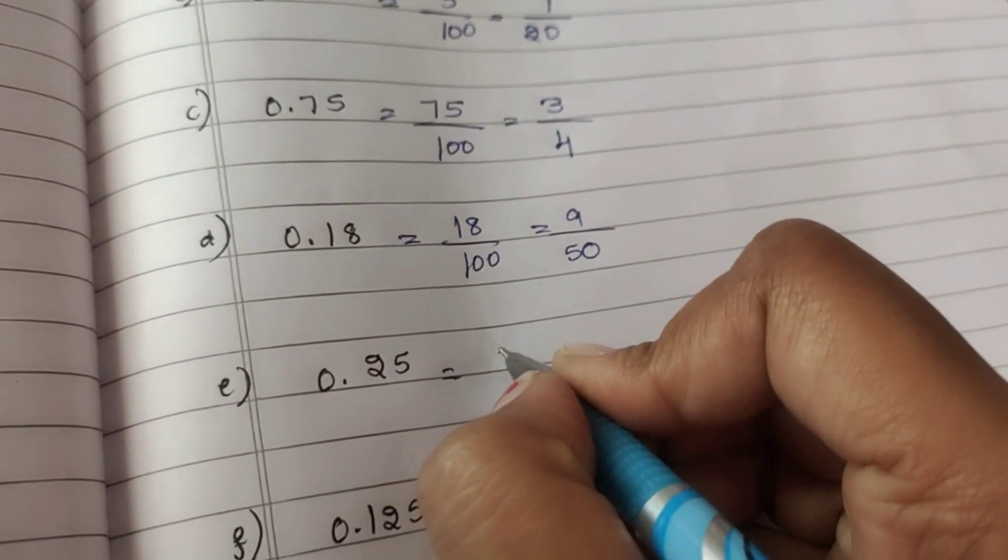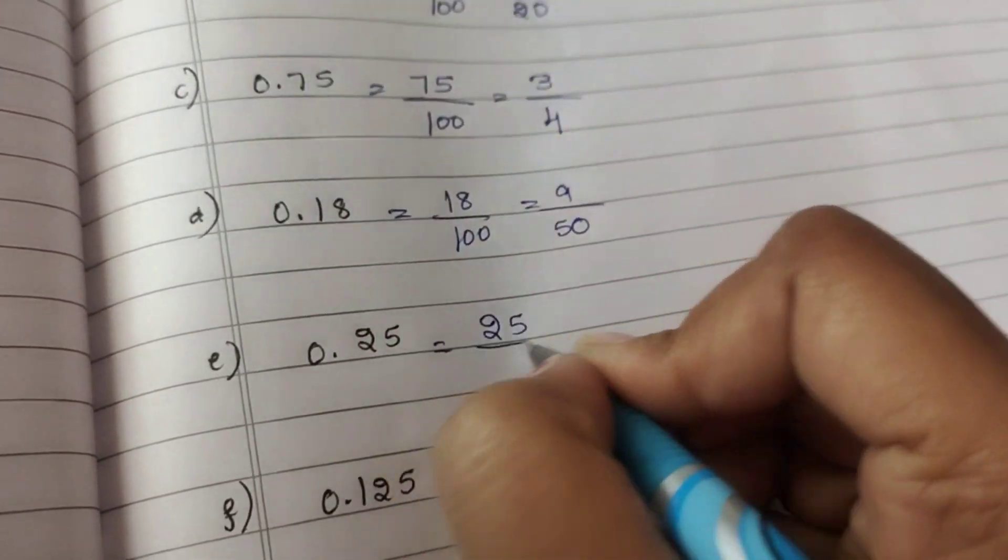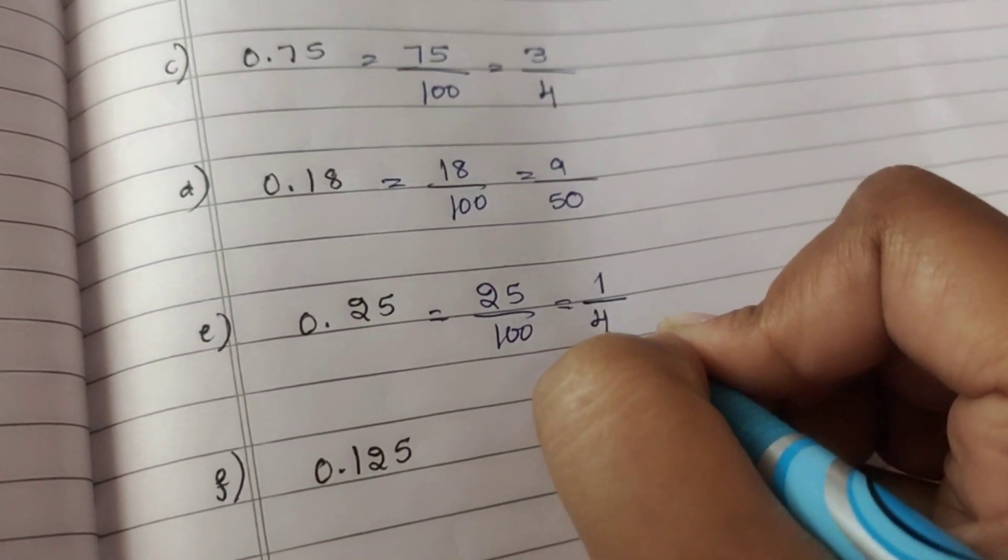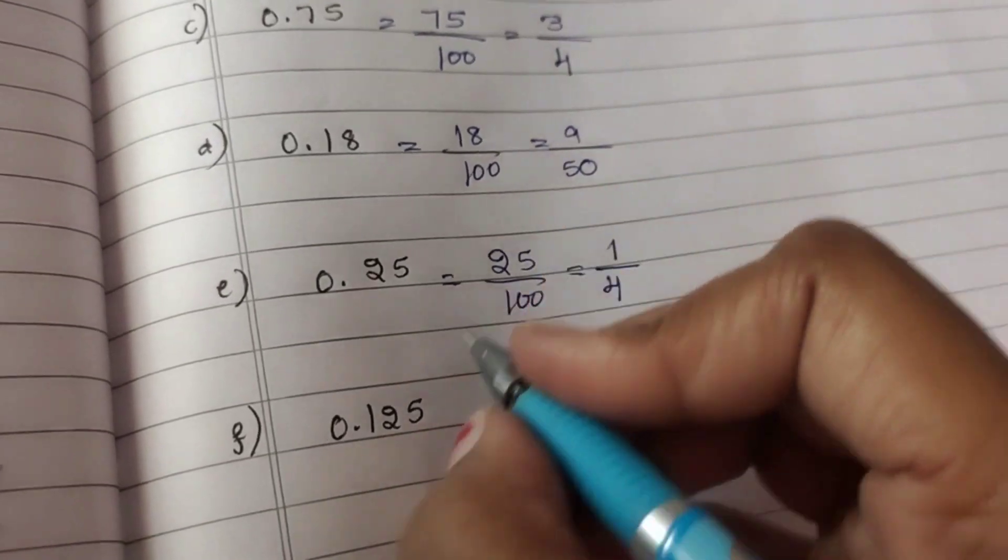0.25 equals 25 by 100. 25 ones are 25, 25 fours are 100, giving 1 by 4.